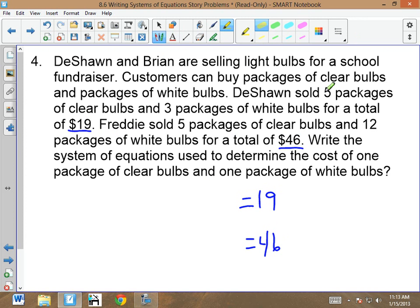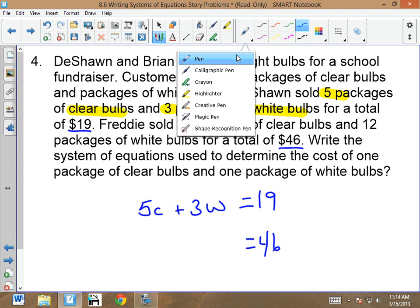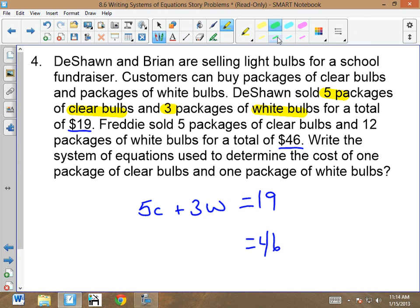How did I get $19? Well, Deshawn got $19 by selling five clear bulbs and three white bulbs. That's how he got that number. He sold five packages of the clear plus three packages of the white. Now, Freddie Brian sold 12 of the white and five of the clear. So Freddie Brian sold five clear, but he sold 12 white, and that equaled $46. That's how we do this.